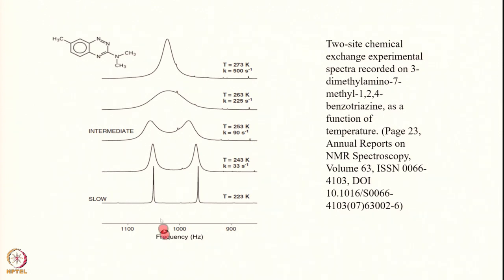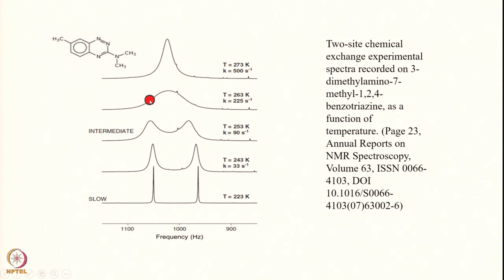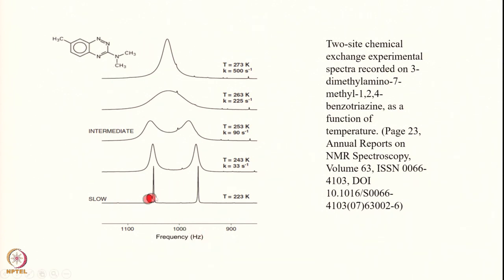Here is an experimental spectrum. We are looking at the two methyl groups NCH3 and CH3 which have separate positions — two separate lines. This spectrum is recorded at 223 K in some solvent. These two methyl groups are non-equivalent because of the double bond character in the N-C bond, so there is no free rotation around this bond, and you see two separate lines.